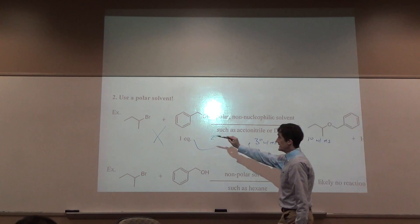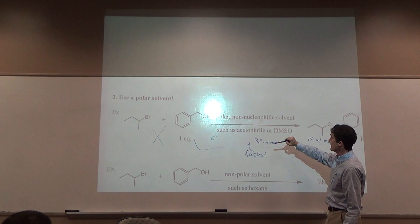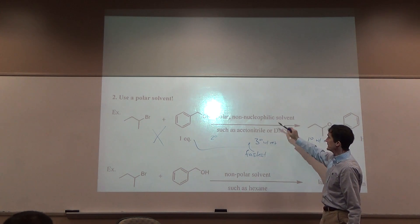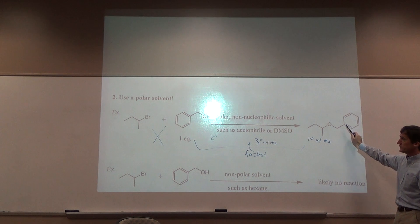If you take this bromide with this alcohol and a polar non-nucleophilic solvent such as acetonitrile and DMSO, you can get the substitution product.